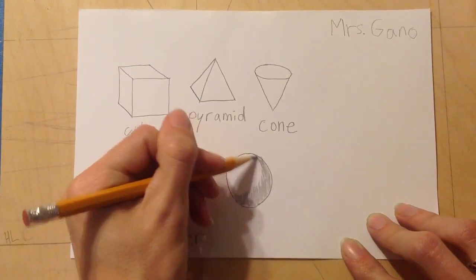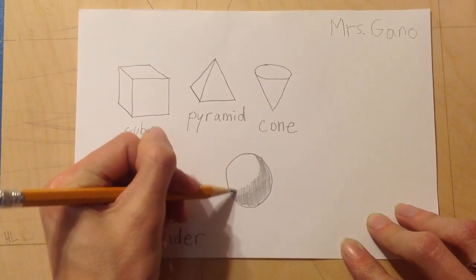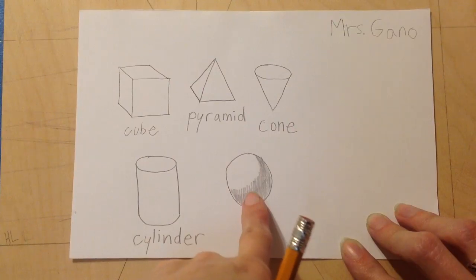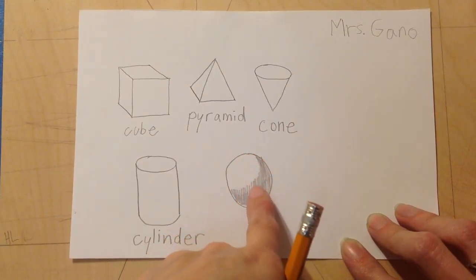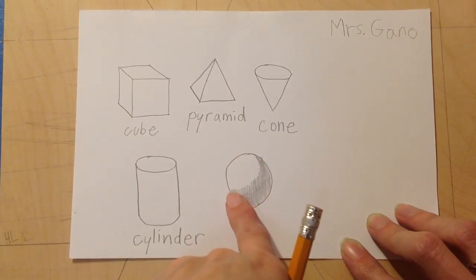And notice that when you have a sphere and it looks round like a ball, the shading is also going to look round. So curve your shading so it's kind of thin right here, thicker here, and thin right here.